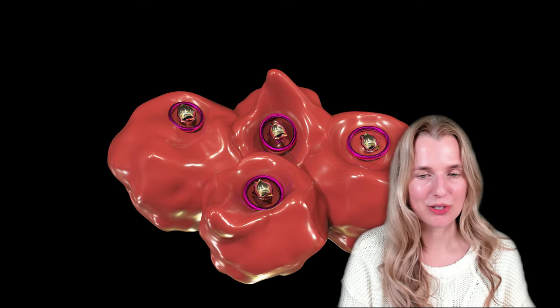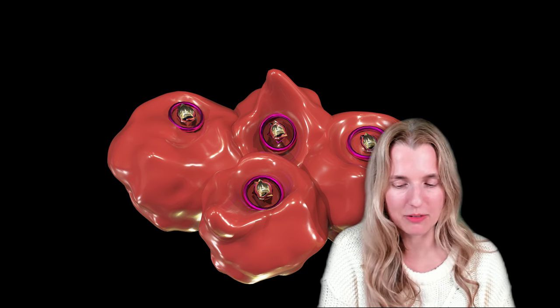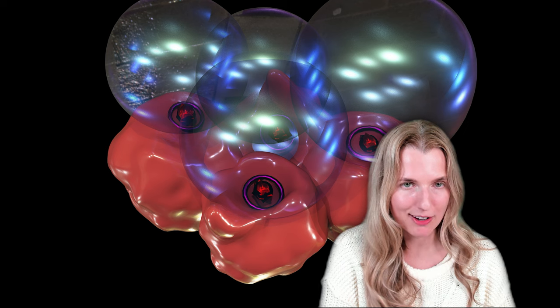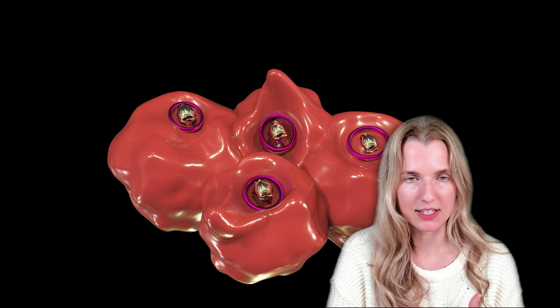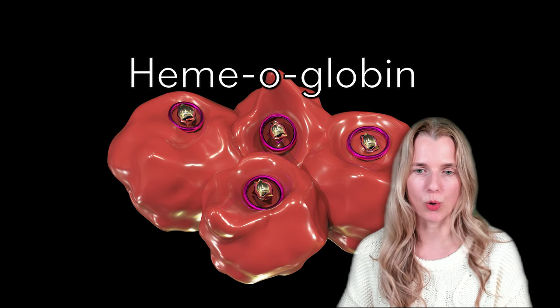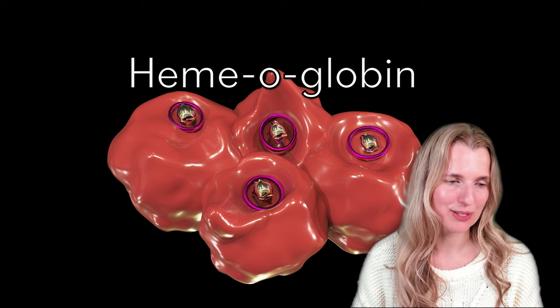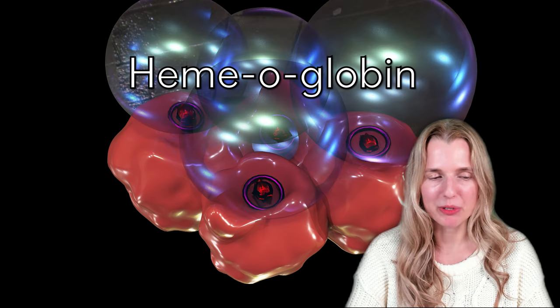So now we're on part two, which is all about hemoglobin. And hemoglobin has this very important job of grabbing oxygen and letting it go. And if we break it down into its components, we can actually break down the word hemoglobin. So we have heme, we have globin, and I like to think the O is maybe for oxygen in there. But we'll start with heme.